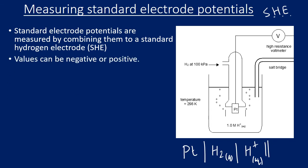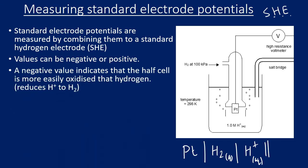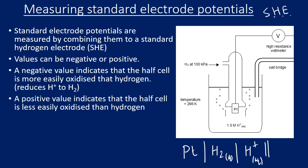The values can come out as either positive or negative in the electrochemical series. A negative value means the half-cell is more easily oxidised than hydrogen — it releases electrons more easily. If you're a negative value, you're oxidised more easily than hydrogen. A positive value means the opposite: you're less easily oxidised than hydrogen, which means you will gain electrons more readily.